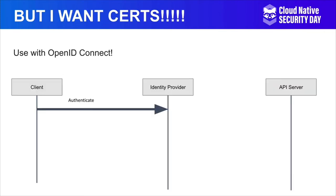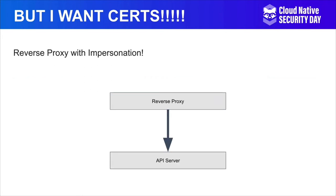If you really want certs, use certs with OpenID Connect — have your identity provider authenticate with the certificate, check your CRL, and you're off to the races. If that doesn't work for you, use a reverse proxy with impersonation. The reverse proxy checks the cert, checks the CRL, and uses impersonation with the API server. This works in both cloud and on-prem solutions.